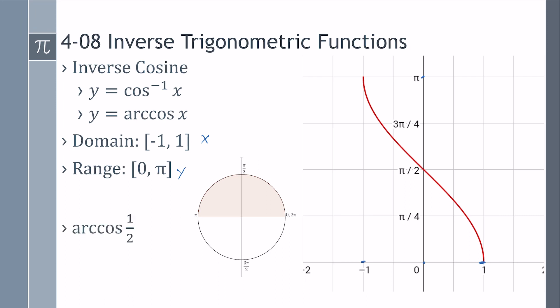So, what is arc cosine of a half? If we think of the unit circle, cosine is x, so where is x equal to a half? It's up there at pi over 3, or it's down here at 5 pi over 3. It can only be in quadrants 1 and 2, so our answer is pi over 3.